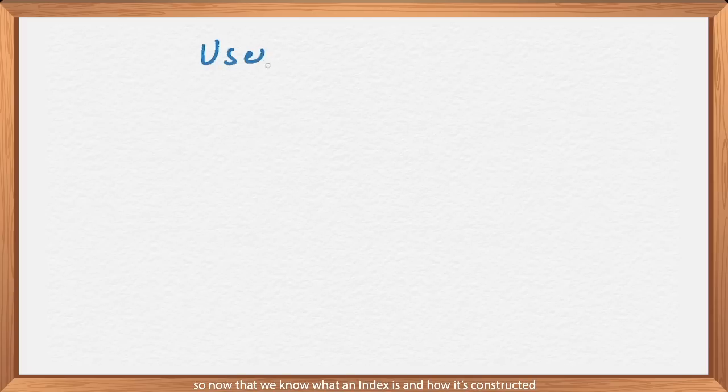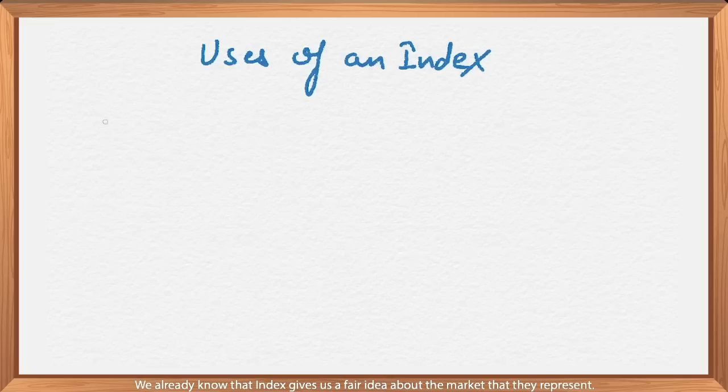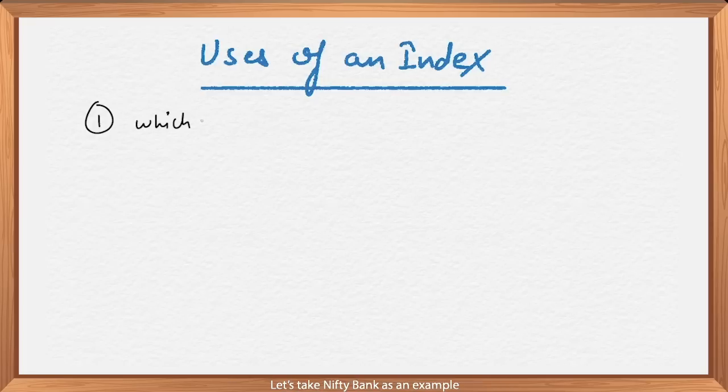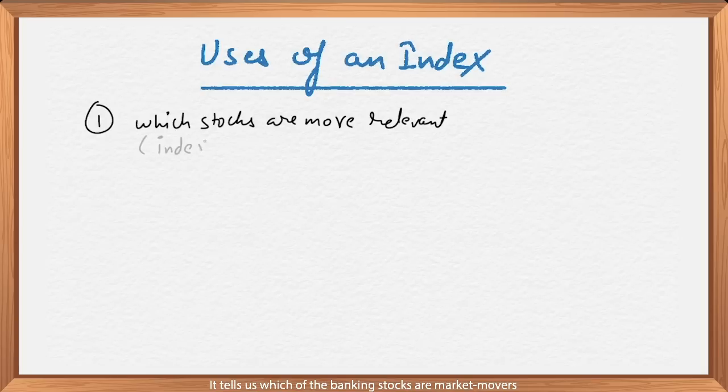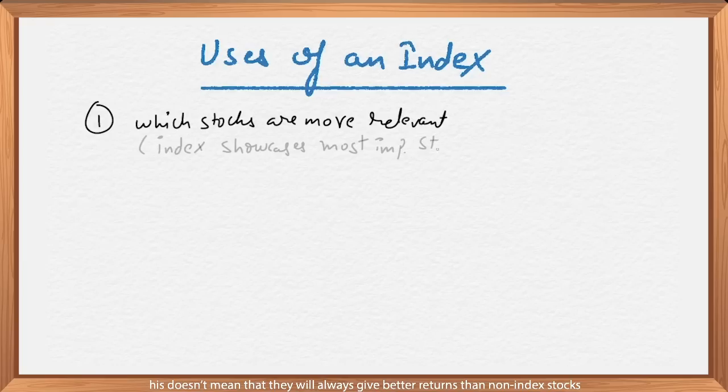Alright, so now that we know what an index is and how it's constructed, what is it used for? We already know that index gives us a fair idea about the market that they represent. In addition, there are other uses of the index as well. Let's take Nifty Bank as an example. It tells us which of the banking stocks are market movers. Think of stocks included in the index as showcase stocks. This doesn't mean that they will always give better returns than non-index stocks, but it's a starting point to think about the sector.